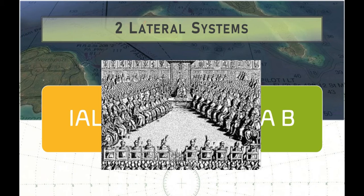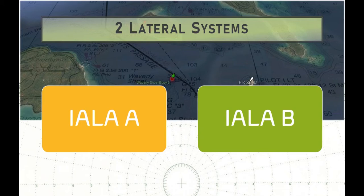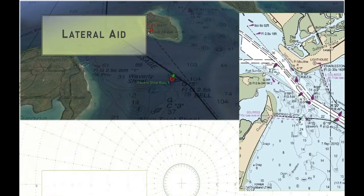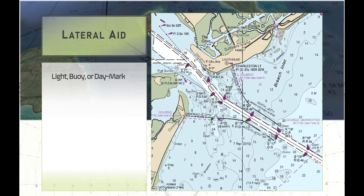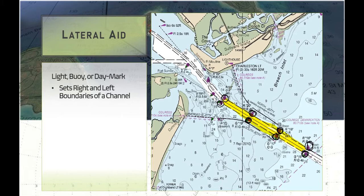Very authoritative and important sounding. The important part is really just the A and the B — these are the two different lateral aid systems that apply to different countries and continents worldwide. A lateral aid is a light, buoy, or day mark that defines the left or right boundary of a channel. It's designed with commercial traffic in mind so that deep draft vessels can operate in safe water as they're either entering or exiting a harbor.